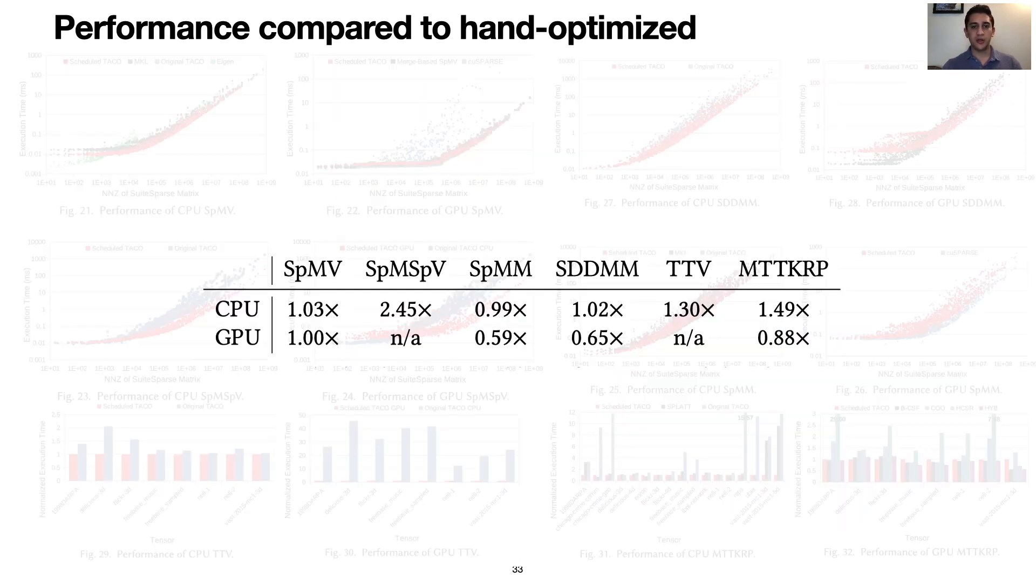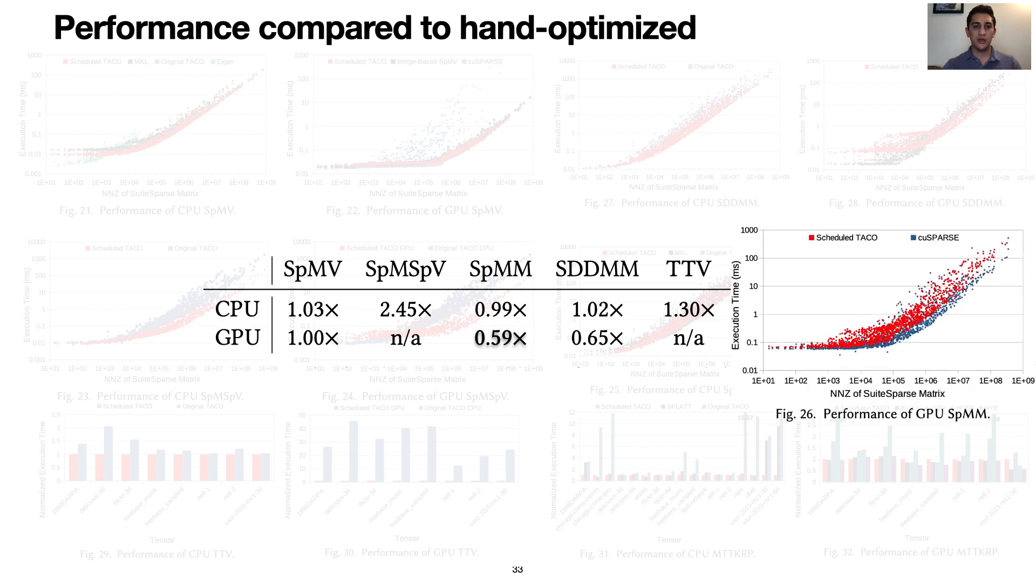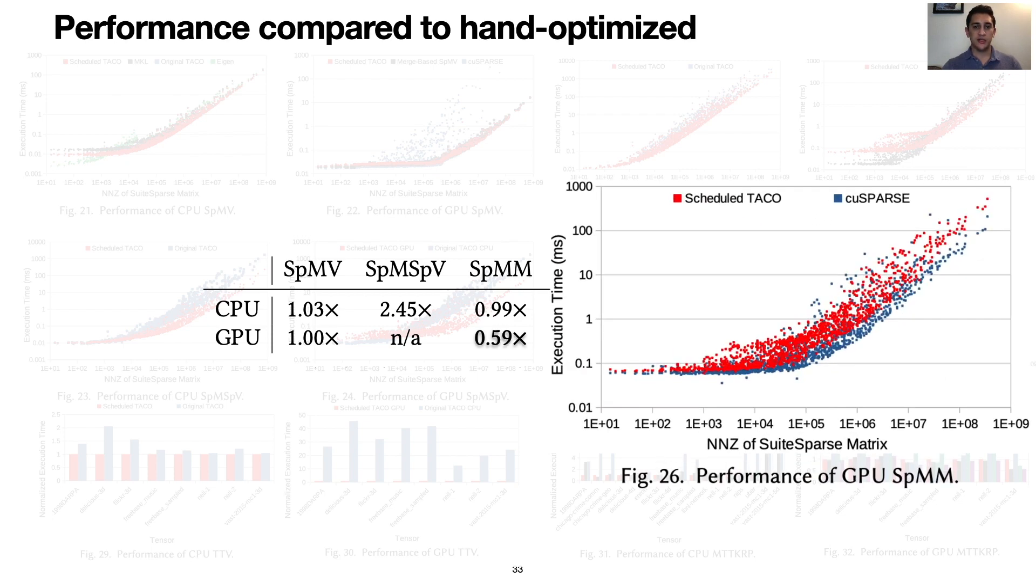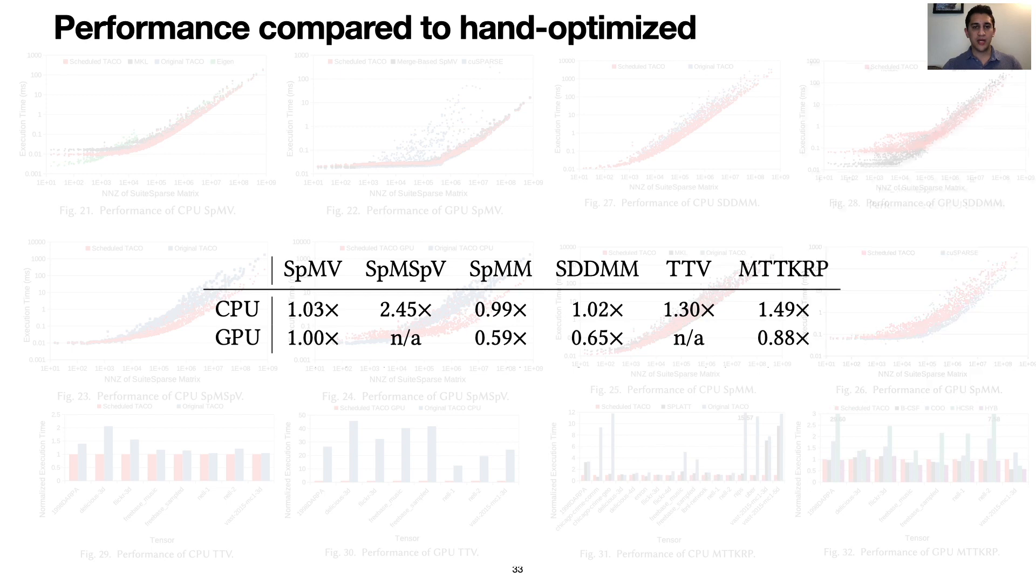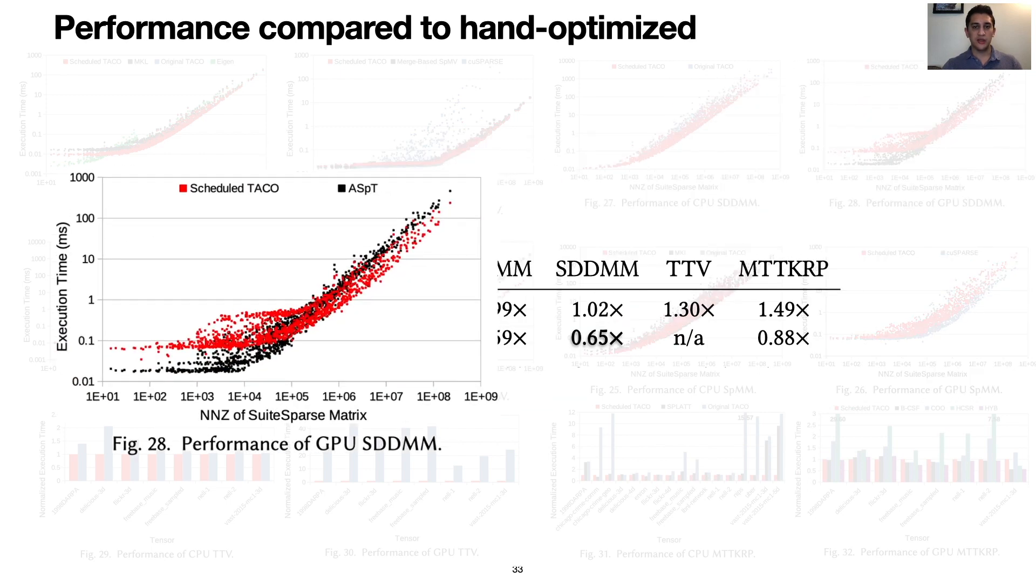In the paper, we demonstrate that we are able to achieve comparable performance to hand-optimized implementations for many problems on both CPU and GPU. This table depicts the speedup of our generated kernels over the fastest hand-optimized implementation that we compare against. For SPMM GPU, there exists further opportunities to better utilize the GPU's shared memory scratchpad. For SDDMM GPU, there remains room to optimize for small problems that take less than 0.1 milliseconds.